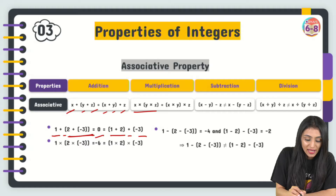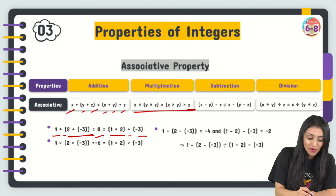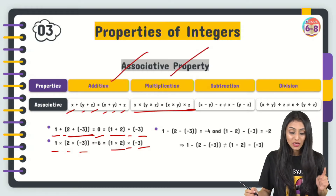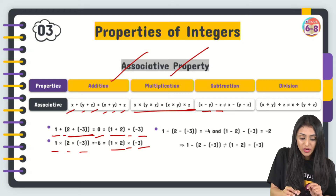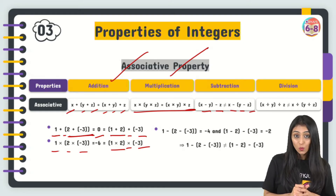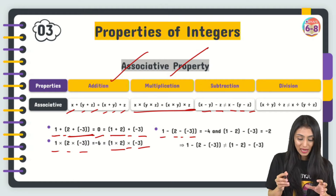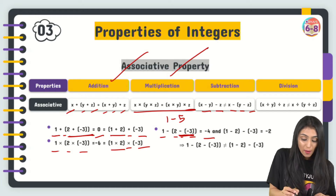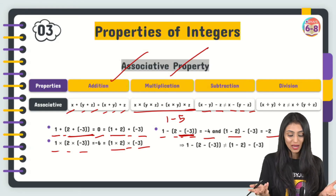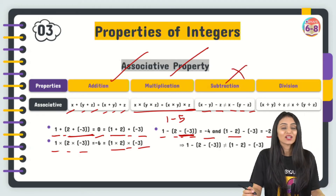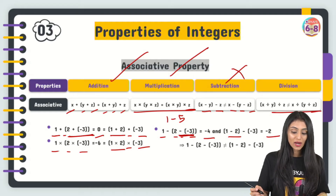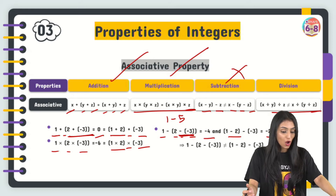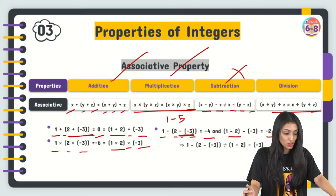For multiplication: (x × y) × z = x × (y × z). Example: 1 × (2 × (−3)) = −6 and (1 × 2) × (−3) = −6. It holds true. For subtraction: x − (y − z) ≠ (x − y) − z. Example: 1 − (2 − (−3)) = 1 − 5 = −4, but (1 − 2) − (−3) = −1 + 3 = 2. The results differ. Similarly, division is also not associative. So subtraction and division of integers are not associative.